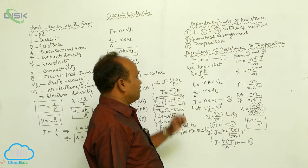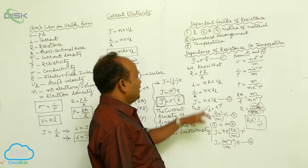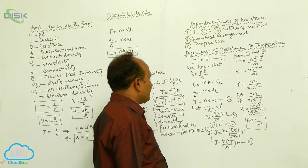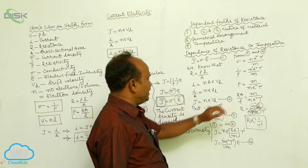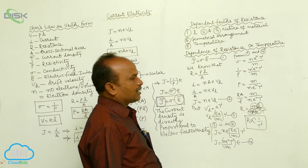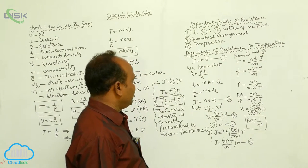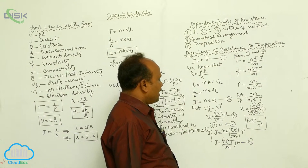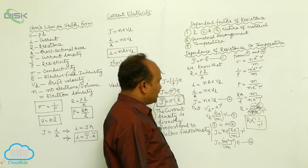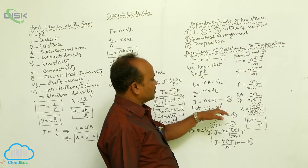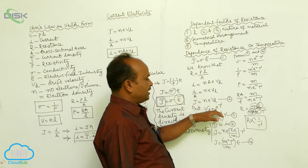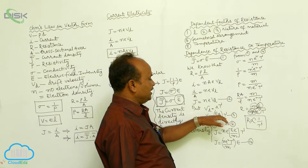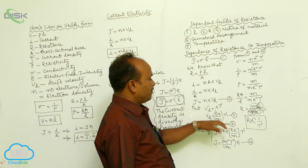I by A equals n e v_d. Therefore J equals n e v_d, where I by A is called current density represented by J. We already know that drift velocity equals a into tau, where a is acceleration equals e E by m.